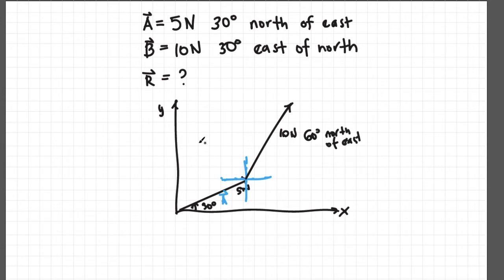The resultant vector is from the tail end of vector A to the arrowhead of vector B. This is the resultant vector that we are after.